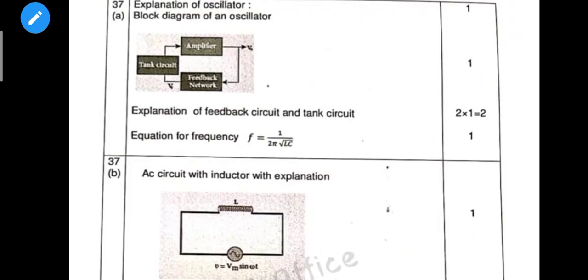Question 37: explanation of oscillator — that is the block diagram. Next, feedback explanation. This is a deleted question. Final: frequency equation.